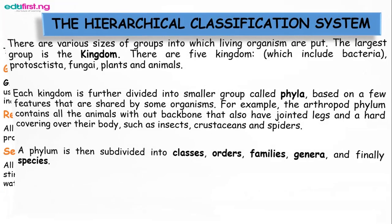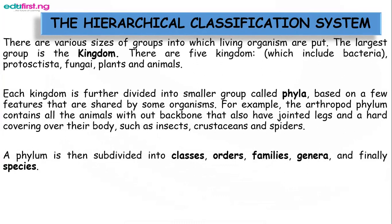Now we look at the hierarchical classification system. Each kingdom is further divided into smaller groups called phyla, based on features shared by some organisms. For example, the arthropod phylum contains all animals without a backbone that also have jointed legs and a hard covering over their body, such as insects, crustaceans, and spiders. A phylum is then subdivided into classes, orders, families, genera, and finally species.